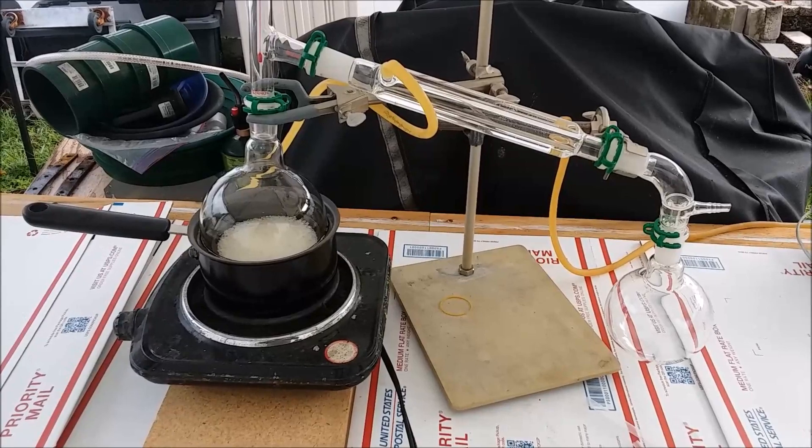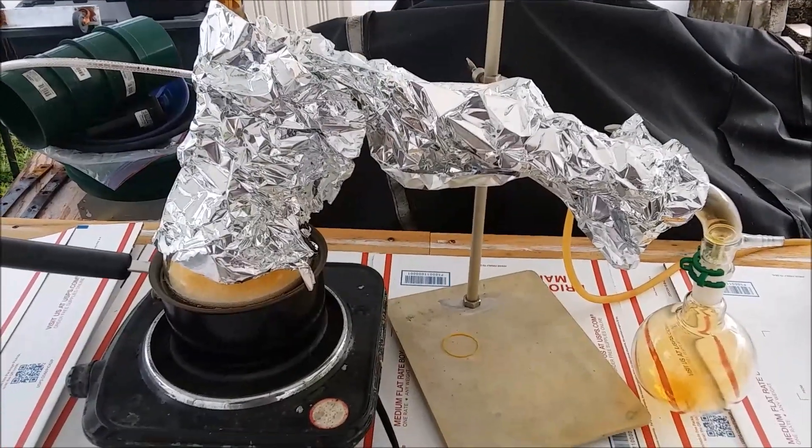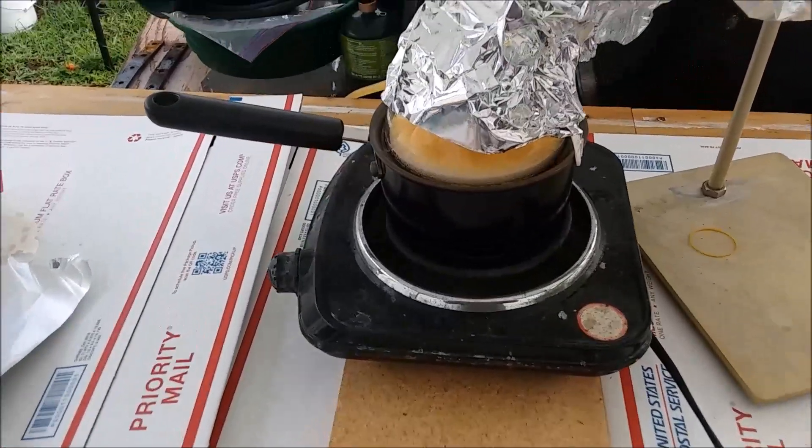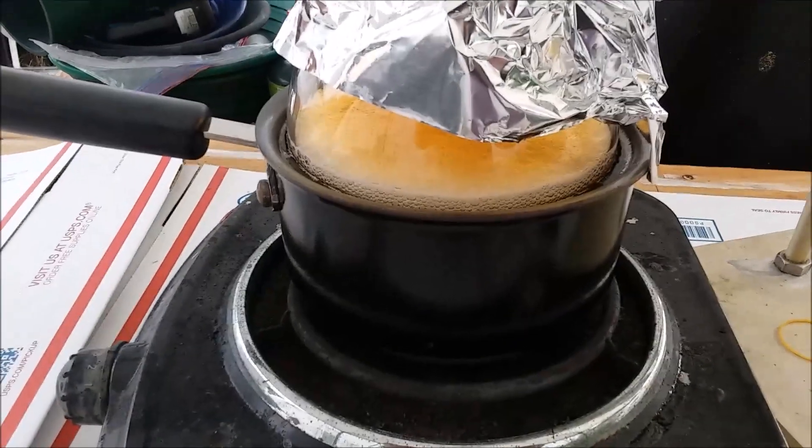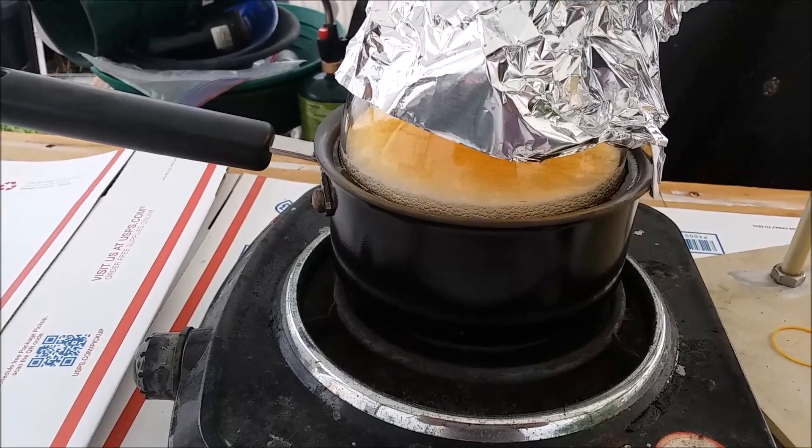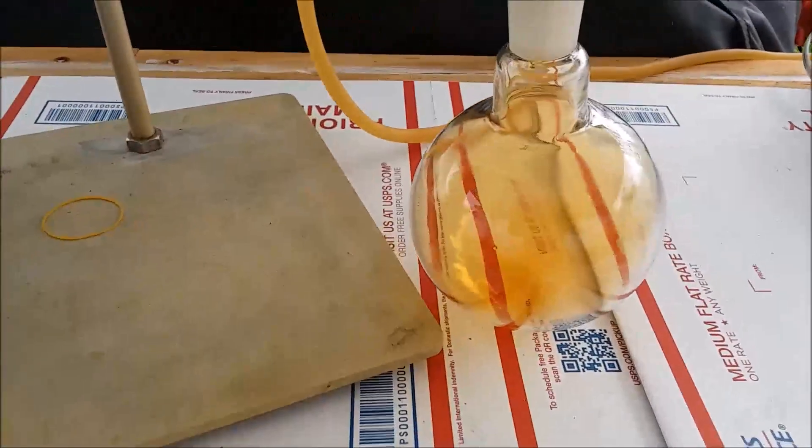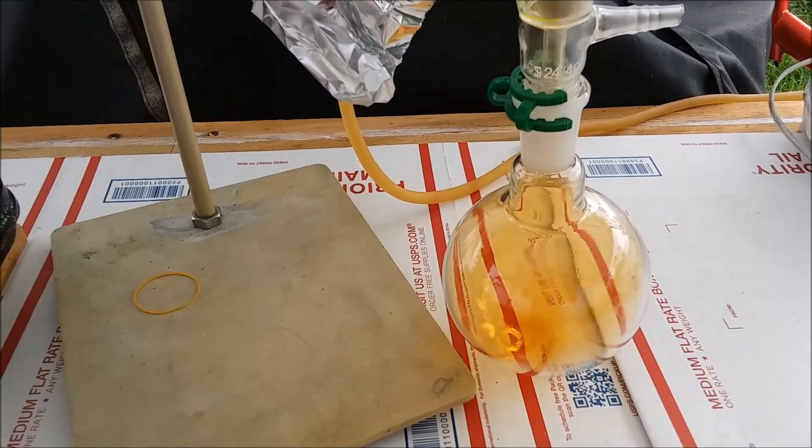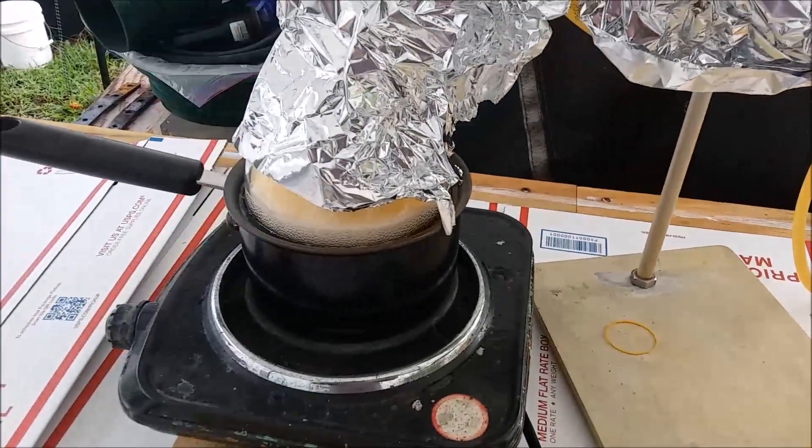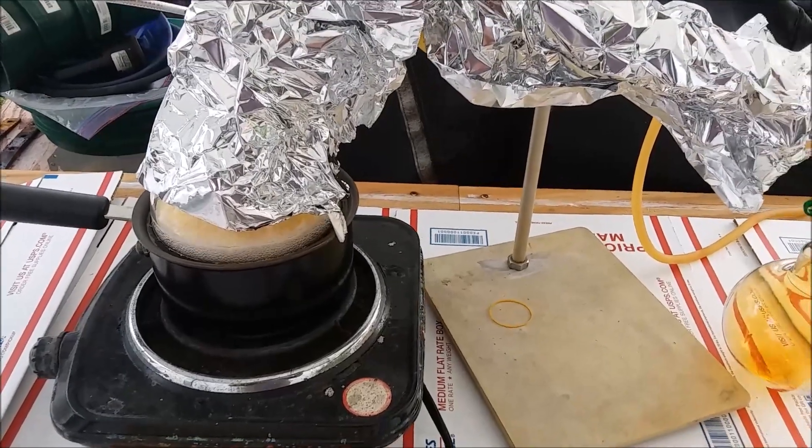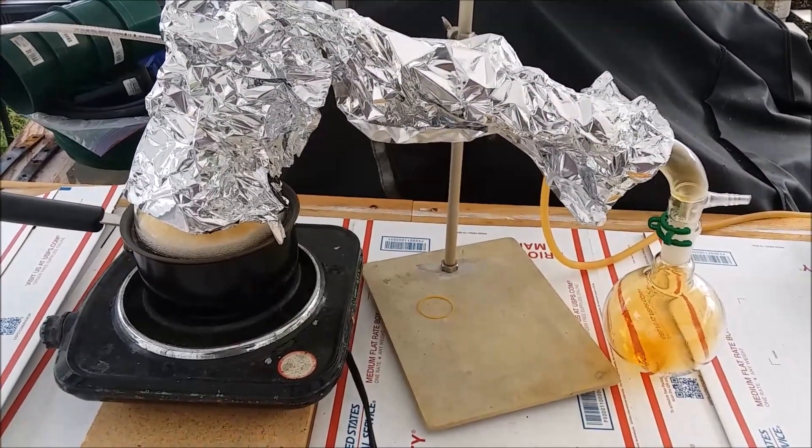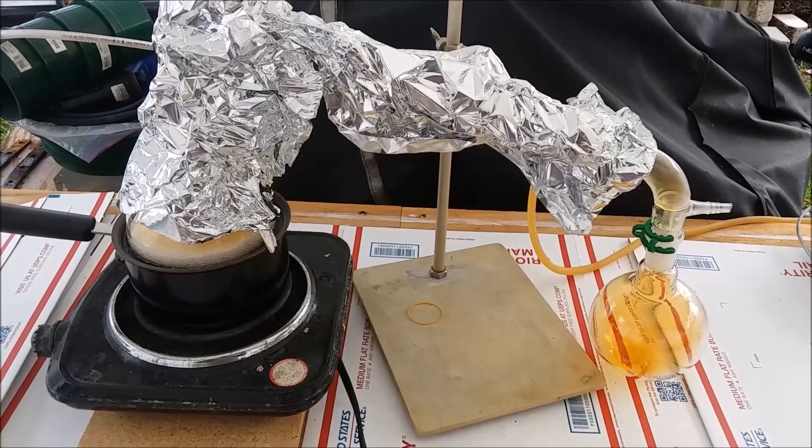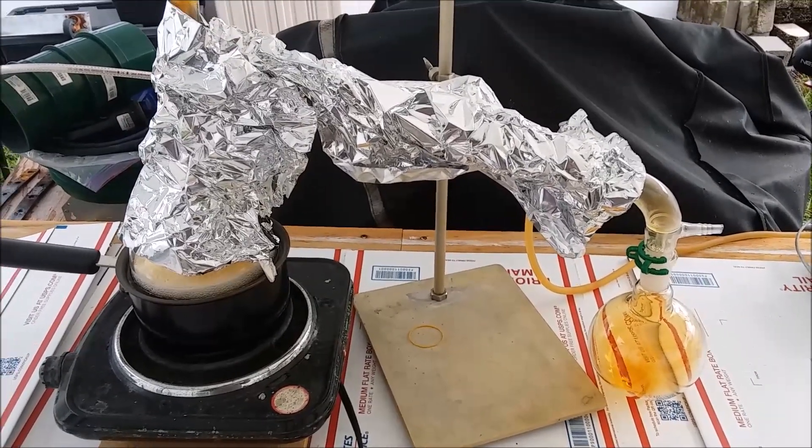It's just now starting to heat up. I put some aluminum foil insulation around it to keep heat in and light out. Things have heated up, got a pretty vigorous reaction going on in the boiling flask. I just turned the heat down because it's starting to look like it might be getting a little too vigorous. Oh, here we go, liquid coming across. Nice. I'm sure it's not pure nitric acid, but it'll be pretty concentrated. I will probably dilute it down to the 68% azeotrope.